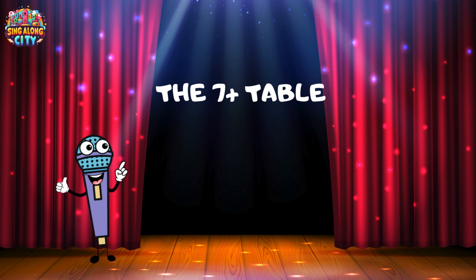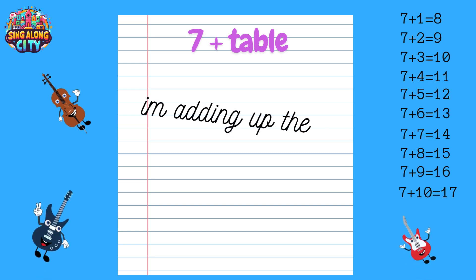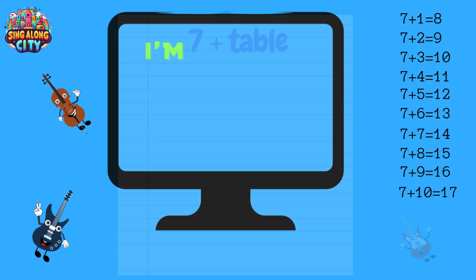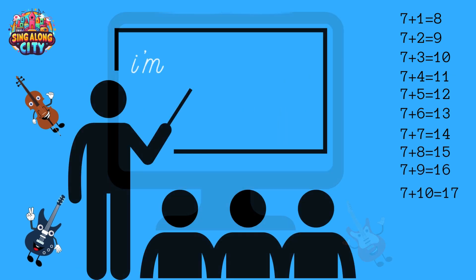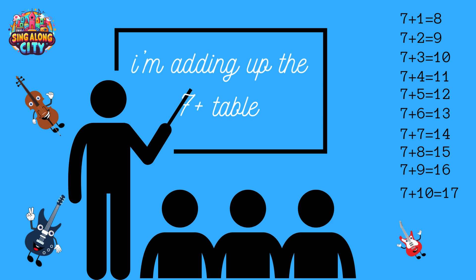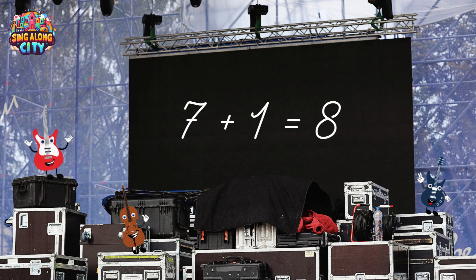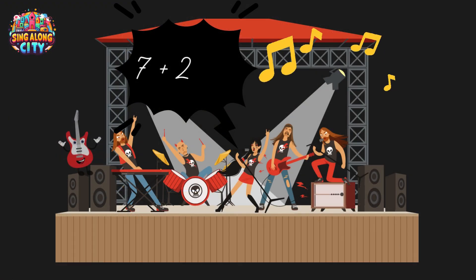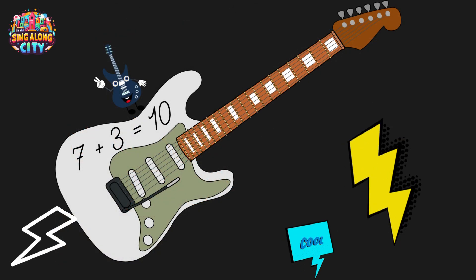Okay, let's rock it up with the 7 plus table! Seven plus one is eight. Seven plus two is nine. Seven plus three is ten.